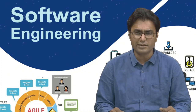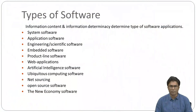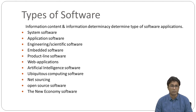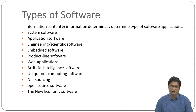Engineering and scientific software can be characterized by number-crunching algorithms ranging from astronomy to volcanology and from molecular biology to automated manufacturing. Examples include computer-assisted design (CAD) and weather forecasting systems.